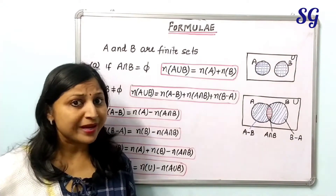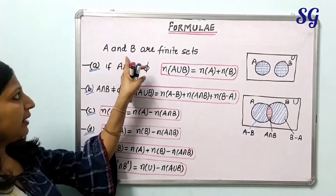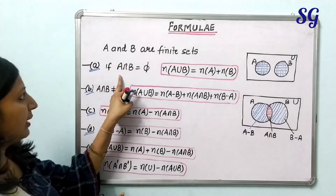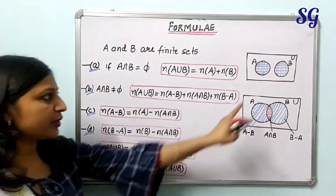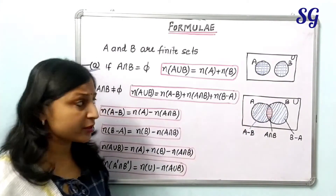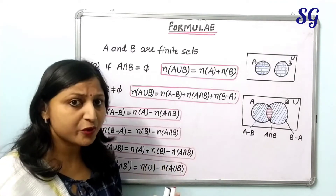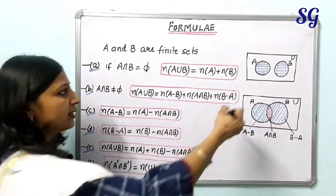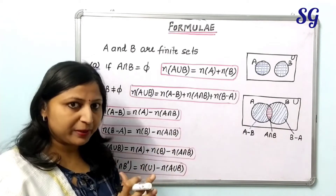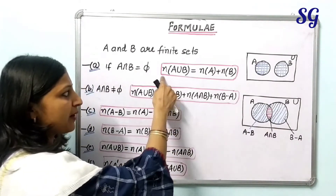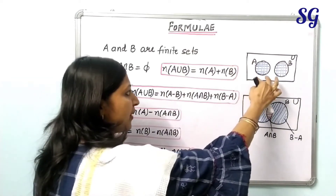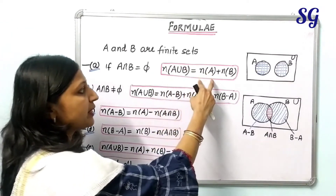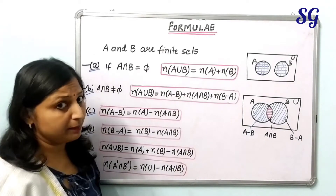Let's move to the formulae. If A and B are finite sets, the first case is when the two sets are disjoint — there are no common elements between them. In the Venn diagram, they appear as two separate circles that do not intersect anywhere. So the union of the two circles is A union B, and the number of elements in A union B equals the number of elements in A plus the number of elements in B.